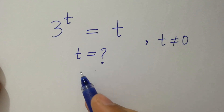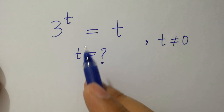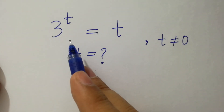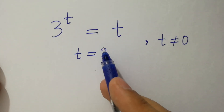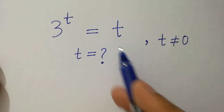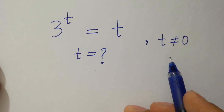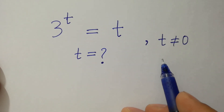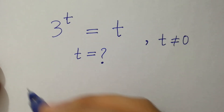Hello friends. Find the value of t if 3 to the power t equals t, where t does not equal 0. Let's have a solution.